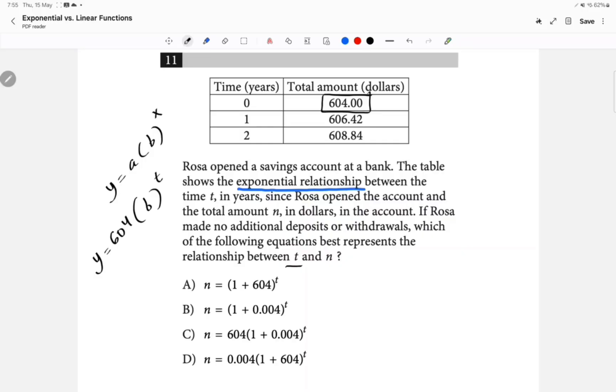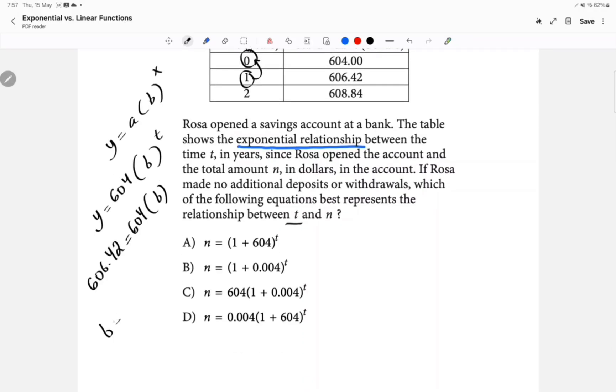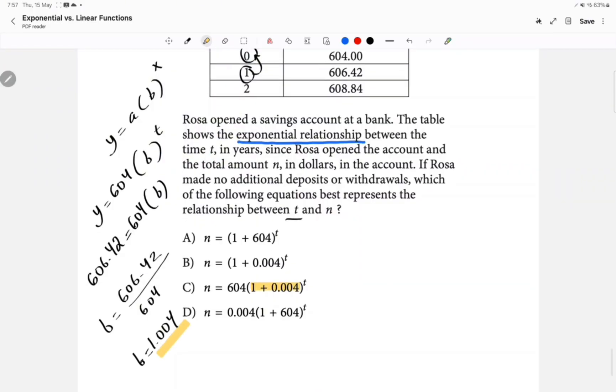So how do we know what B is? So you will go to the second row. You're going to replace Y with 606.42, and you're going to be replacing the time with 1 minus 0, which is just 1. So B to the power of 1 is just B. So now we're going to say B equals 606.42 over 604. Let's see how much that will give us for B. And I got 1.004. So that means you have to choose the choice in the brackets, which is going to be 1 plus 0.004, because that will give you 1.004. So the answer is going to be choice C.